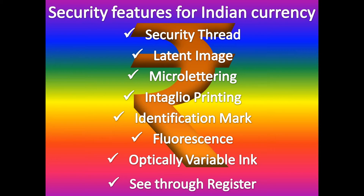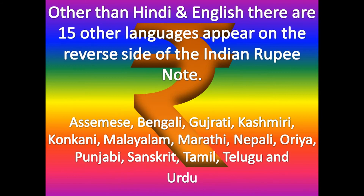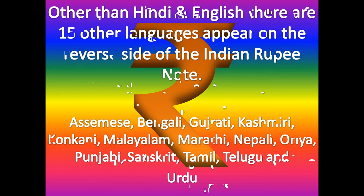The 15 languages on the Indian rupee note include Assamese, Bengali, Gujarati, Kashmiri, Konkani, Malayalam, Marathi, Nepali, Oriya, Punjabi, Sanskrit, Tamil, Telugu, and Urdu. For India and Pakistan, the value of rupee 1 is 100 paisa.